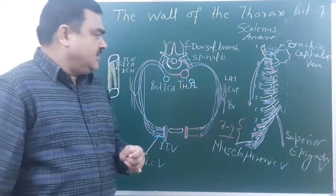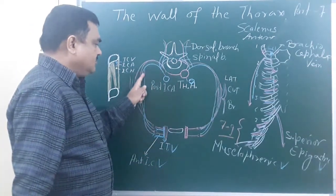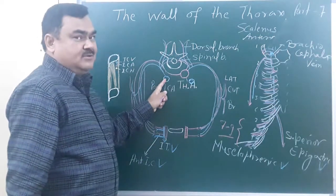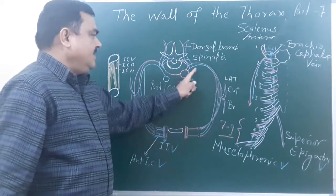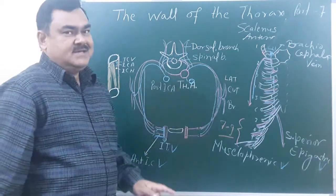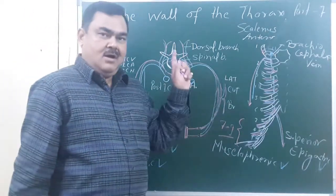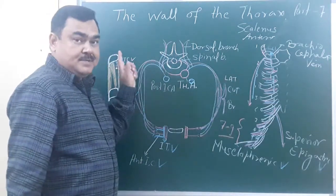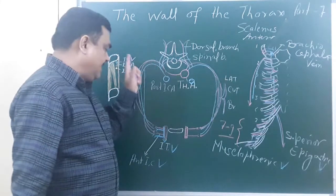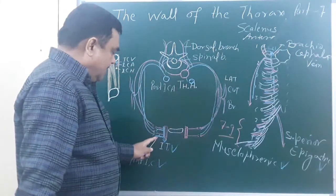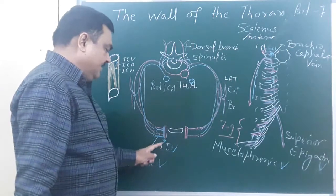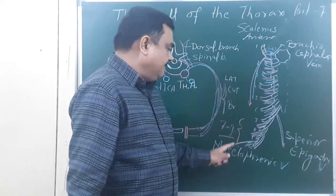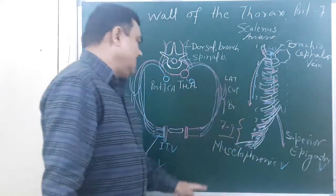Each intercostal space is drained by the posterior intercostal vein and the anterior intercostal vein. The posterior intercostal vein on the right side drains mostly into the azygos vein, and on the left side drains into the hemi-azygos vein. The upper part drains into the brachiocephalic vein. In the first intercostal space it drains into the brachiocephalic vein on the right side. The anterior intercostal vein drains into the internal thoracic vein for the upper 6 intercostal spaces, and into the musculophrenic vein for the 7th to 9th spaces.